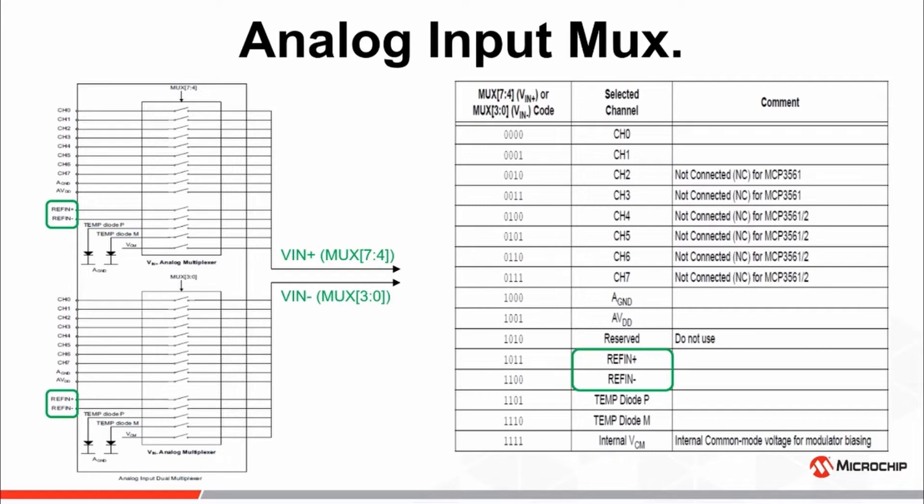While this may seem counterintuitive, as the output will always saturate, this can be a useful diagnostic mode for determining the gain error of the ADC when using a gain setting of 1/3x.